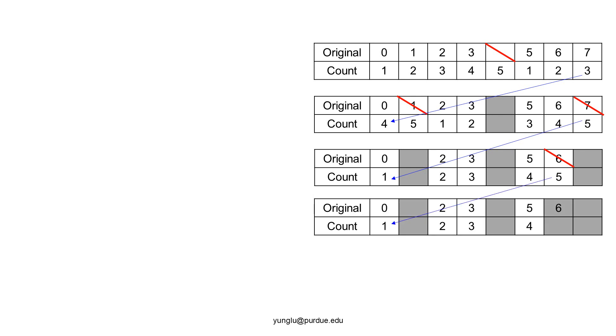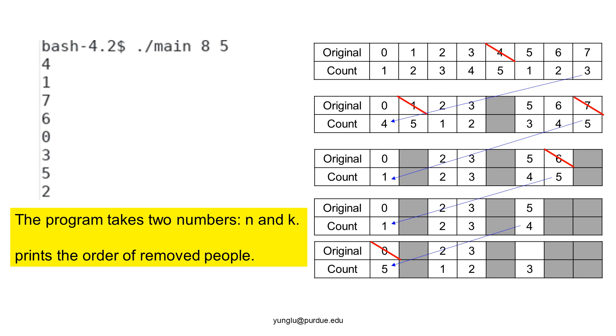The next round removes index 0. The left side of this slide shows an execution of the program using 8 and 5 as the inputs. The program prints the indexes of the people that are removed. As you can see, the first removed person has index 4, then 1, then 7, then 6.